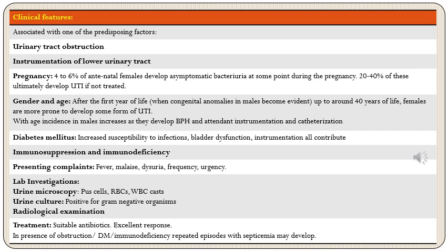Presenting complaints can be constitutional or limited to the urinary tract. Constitutional complaints are fever and malaise. Urinary complaints include dysuria (pain during urination), frequency, and urgency. Lab investigations include urine microscopy showing pus cells, RBCs, WBC casts, and RBC casts; urine culture identifying gram-negative organisms; and radiological examination to evaluate for urinary tract obstruction.